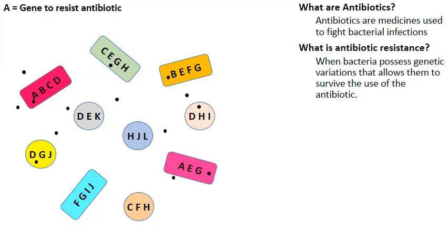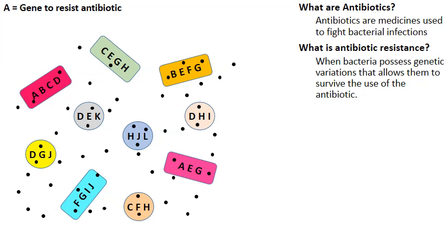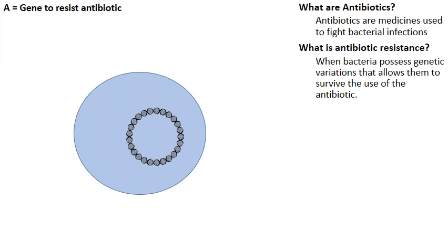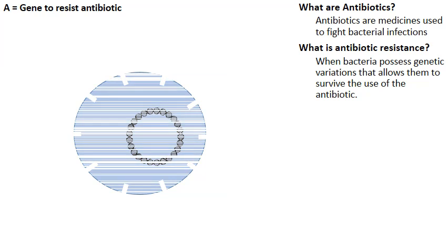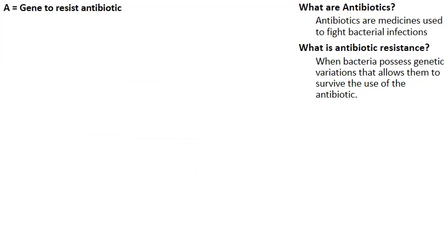Here we have the person taking their antibiotic. They went to the doctor, got a prescription, and now they're taking their antibiotic. The antibiotic will be absorbed into the bacterial cells. Let's zoom in on a highlighted bacteria cell. Because this bacteria cell did not have gene A, little holes were popped in the cell membrane and it died. The bacteria died — we're a step closer to recovery.